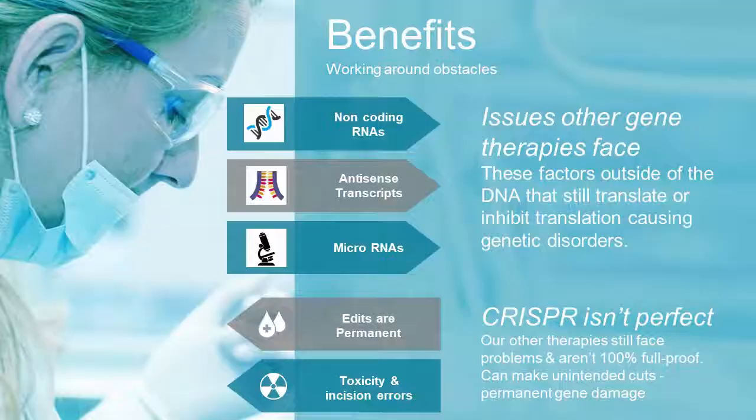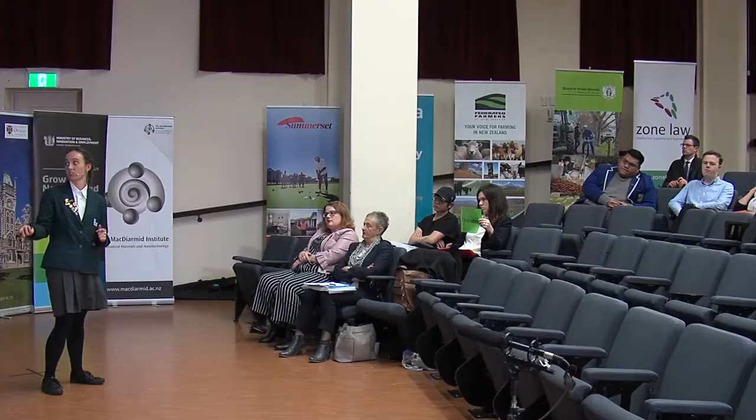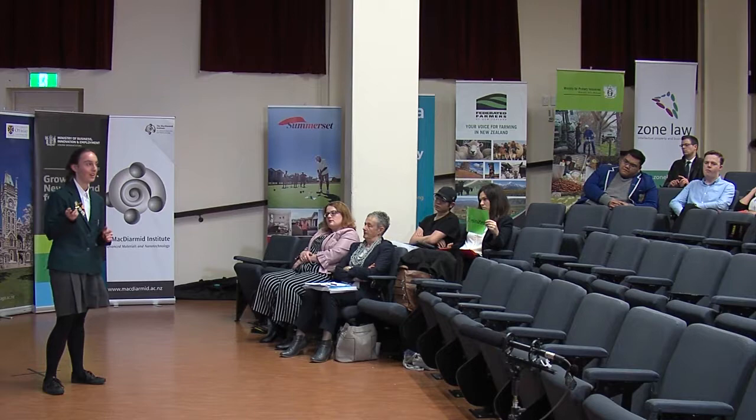As CRISPR's endonucleases are degradable by our body, we are making no biological waste — which is fantastic. In the environment, we are reducing waste like nitrogen fertilisers polluting our waterways while still benefiting from the same produce, if not more. Other biological benefits versus other genetic therapies include the ability to work around issues that classical CRISPR cannot: making permanent cuts in the DNA has issues around toxicity and unintended edits. Furthermore, epigenomes can work around non-coding RNAs, anti-transcripts, and microRNAs, which are transcriptional factors that slip through other genetic therapies.